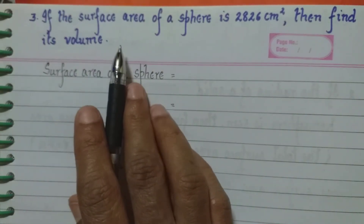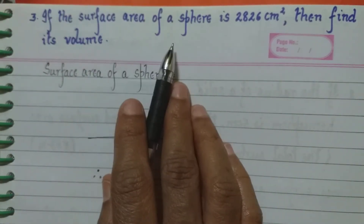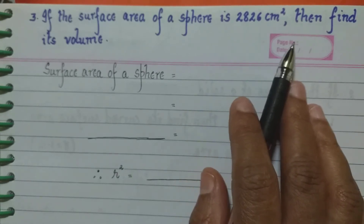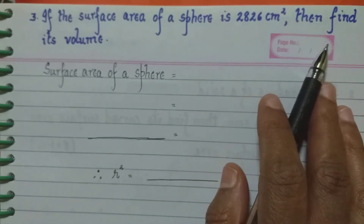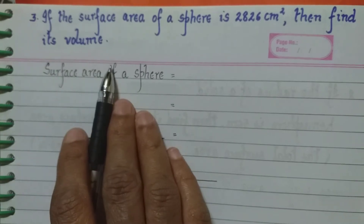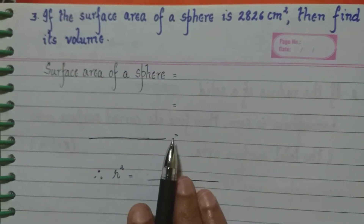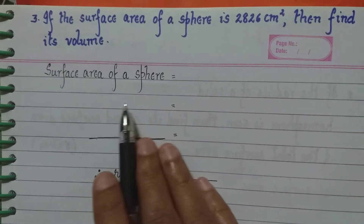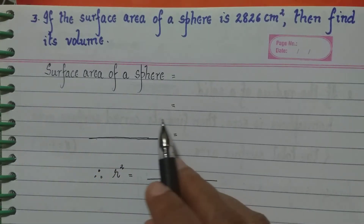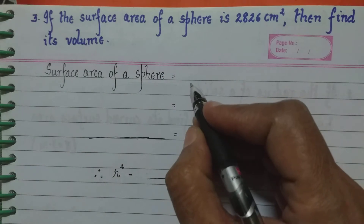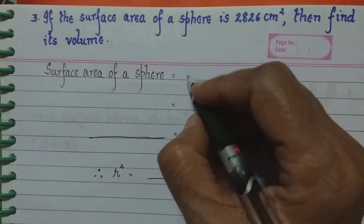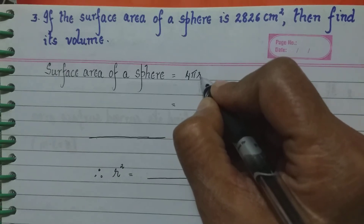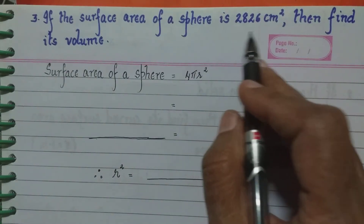Third sub-question: if the surface area of a sphere is 2826 cm², then find its volume. First we write the formula for surface area of a sphere. The surface area of a sphere is given by the formula 4πr².